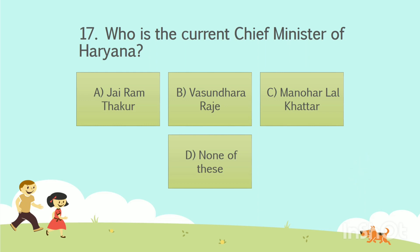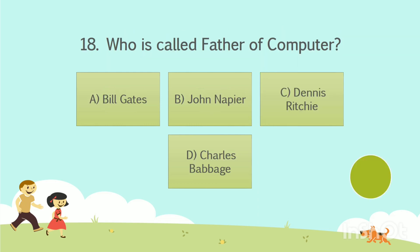The answer is Option C: Manohar Lal Khattar. Question number 18. Who is called the father of the computer? Option A: Bill Gates. Option B: John Napier. Option C: Dennis Ritchie. Option D: Charles Babbage. Your time starts now.